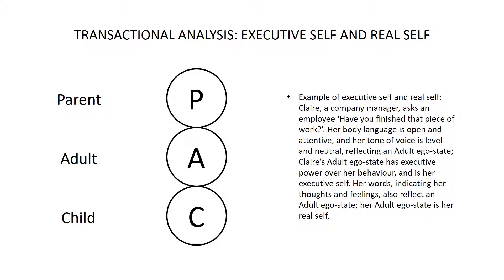To illustrate this, we can use the example of Claire, a company manager, who asks an employee, 'Have you finished that piece of work?' Her body language is open and attentive, and her tone of voice is level and neutral. This behavior reflects an adult ego state. Therefore, we can say that Claire's adult ego state has executive power over her behavior and is her executive self. Her words, designed to seek information, also reflect an adult ego state, and since they indicate her internal thoughts and feelings, her adult ego state is also her real self.